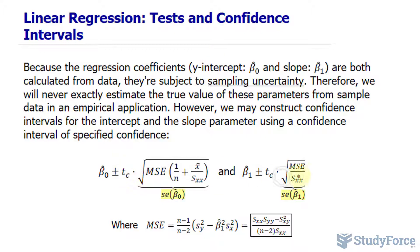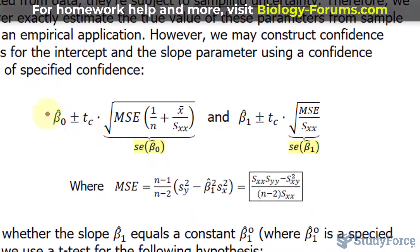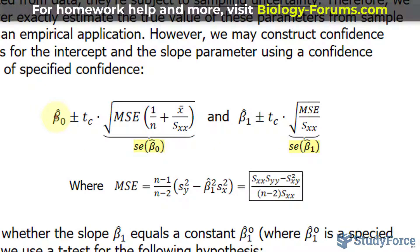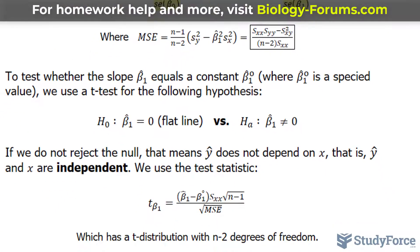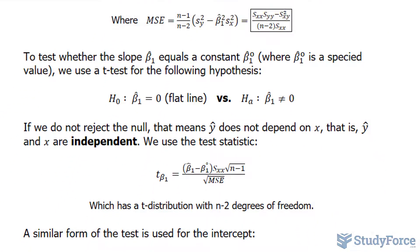We'll be using these two formulas to find those confidence intervals at 95% confidence. As you can see, the first one is for the y-intercept and the second one is for the slope. Furthermore, to test whether the slope is flat or not, we use a t-test for the following hypotheses.